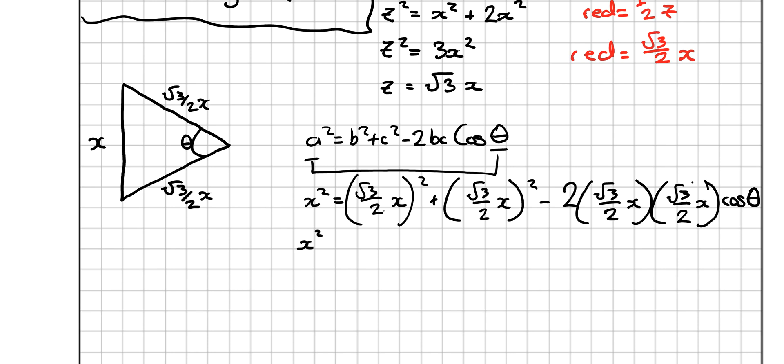And start multiplying it out. x². How do we multiply fractions? Top by top, bottom by bottom. So how do we square fractions? You're multiplying it by itself. So it's top by top, bottom by bottom again. Root 3 by root 3 is 3, 2 by 2 is 4, x². Exact same thing, 3 over 4x². Minus 2. Root 3 by root 3 is 3. 3 over 4x² cos θ. x² is equal to 6 over 4x² minus 3 over 2x² cos θ.